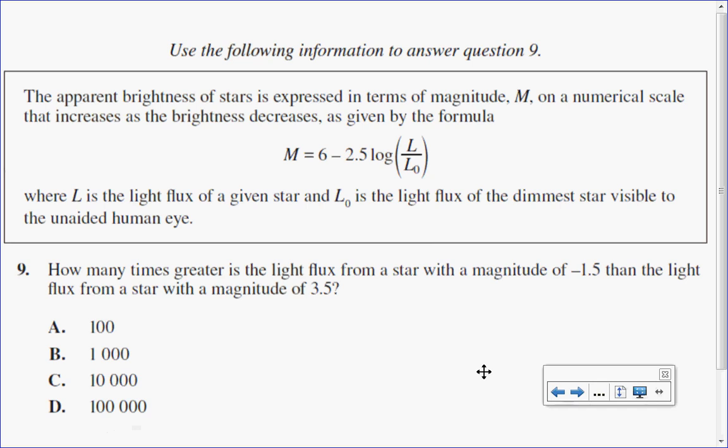L is the light flux of a given star, and L₀ is the light flux of the dimmest star visible to the unaided human eye. We want to know how many times greater the light flux from a star with magnitude −1.5 is compared to a star with magnitude 3.5.